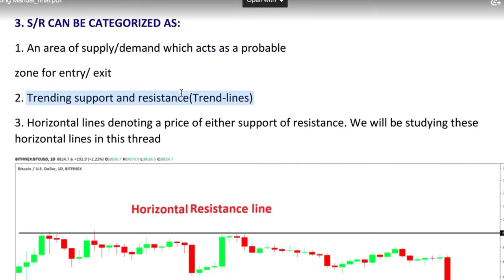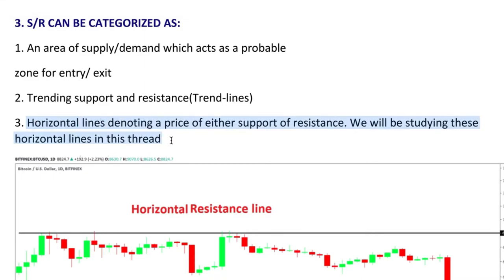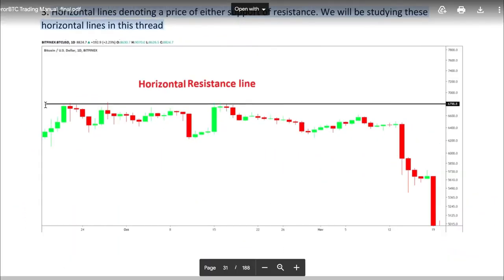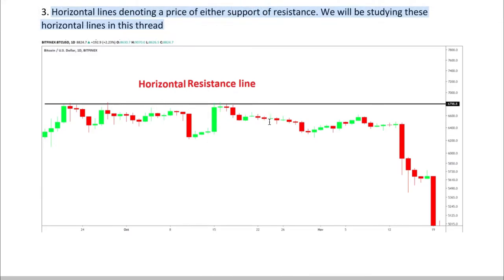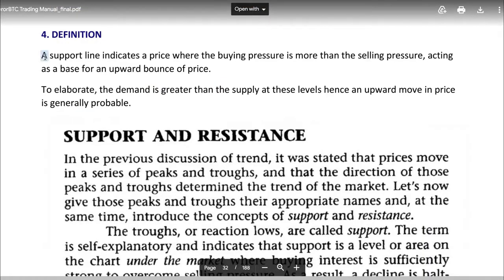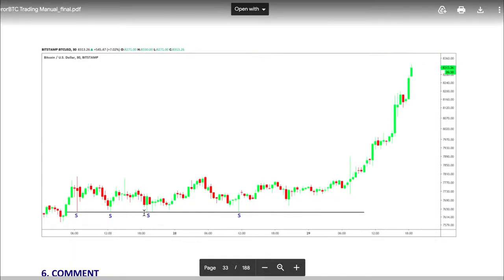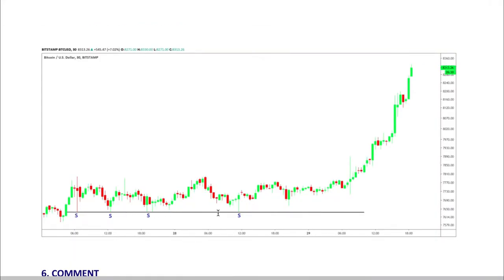Two: trading support and resistance. Three: horizontal lines denoting a price of either support or resistance. We will be studying these horizontal lines in this thread. So this is the horizontal resistance line. Definition: a support line indicates a price where the buying pressure is more than the selling pressure, acting as a base for an upward bounce of price. Here's an example of a support line. Let's learn how to draw one.